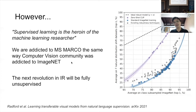I argue that the next revolution in information retrieval will be fully unsupervised — or at least we'll need very few training examples just to hint to the model what to expect from its output. As Nils Reimers already pointed out, we shouldn't need half a million training examples to learn relevance well. As humans we don't need that amount of training data, so our models shouldn't either in order to perform well on zero-shot tests.